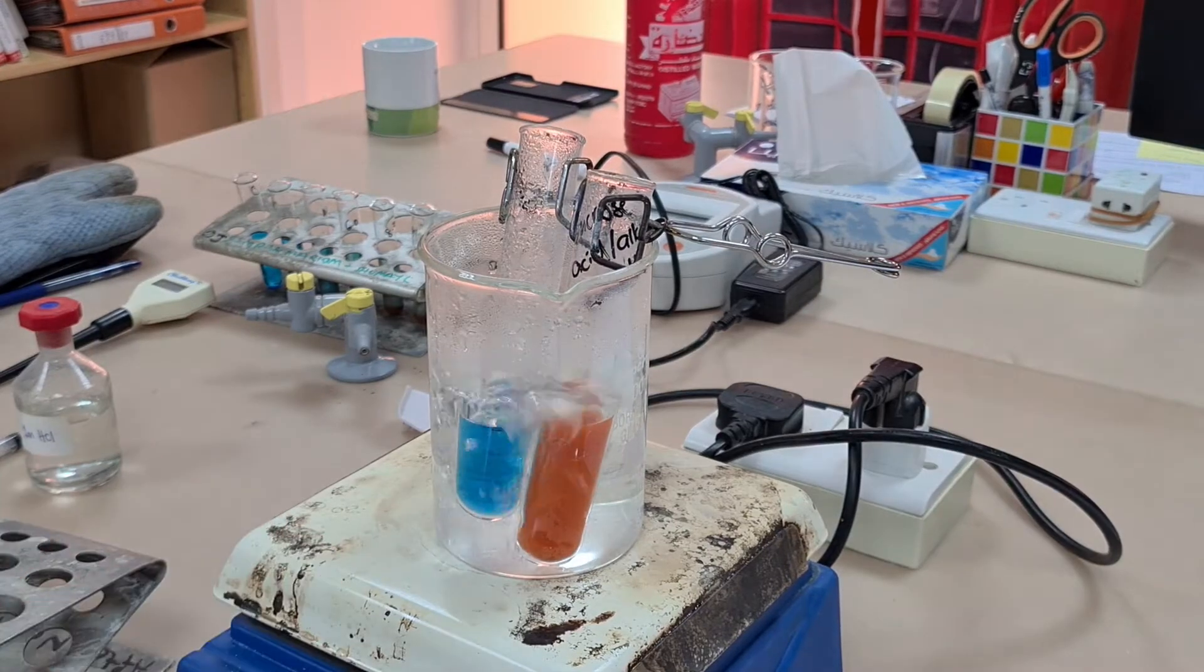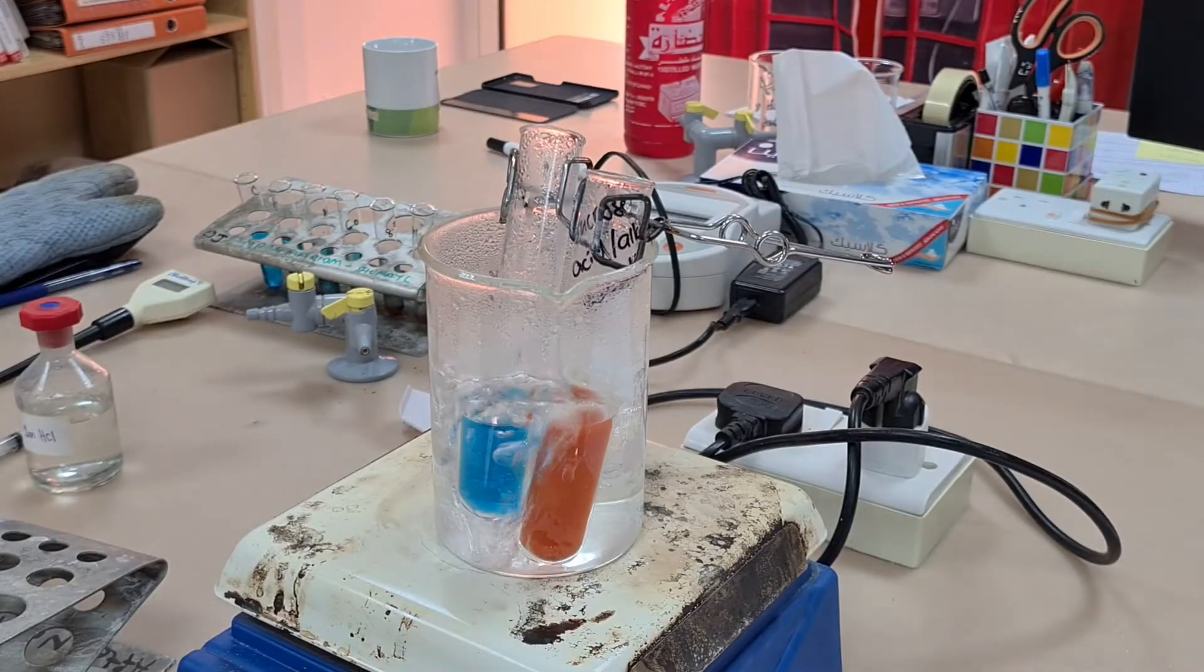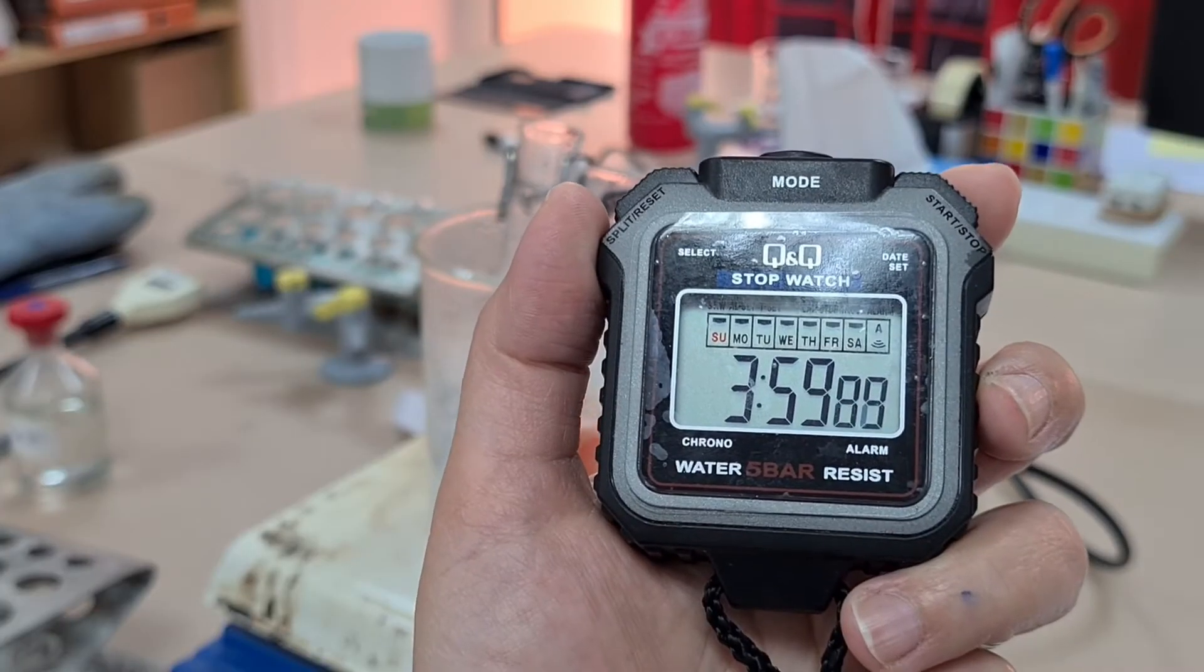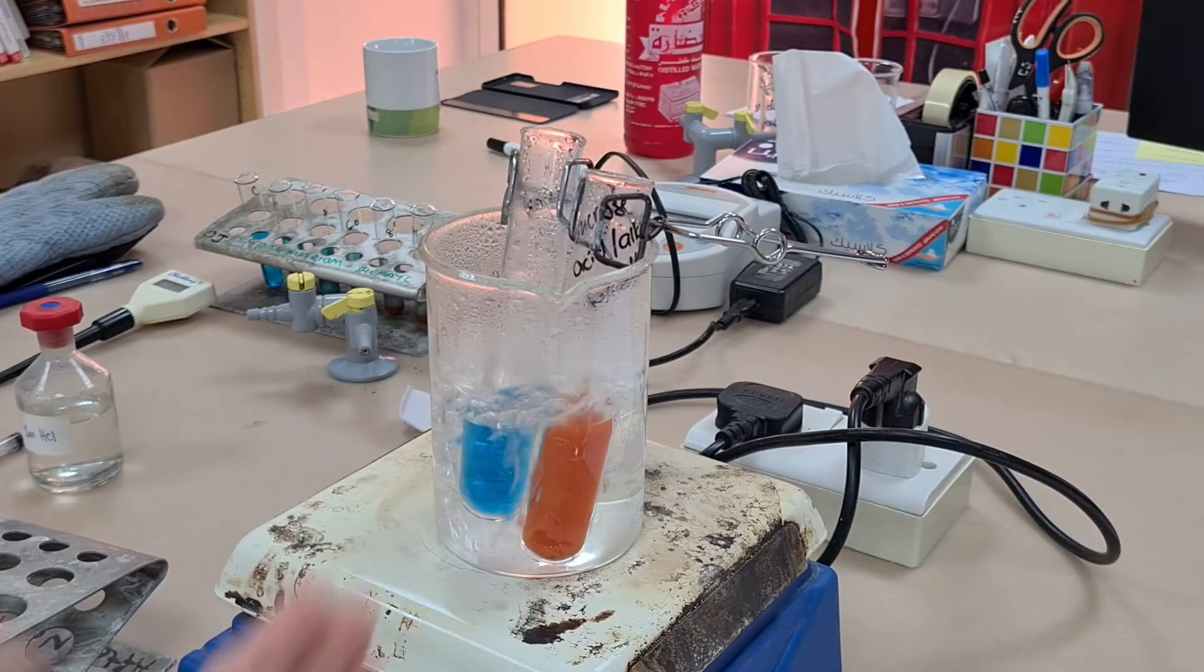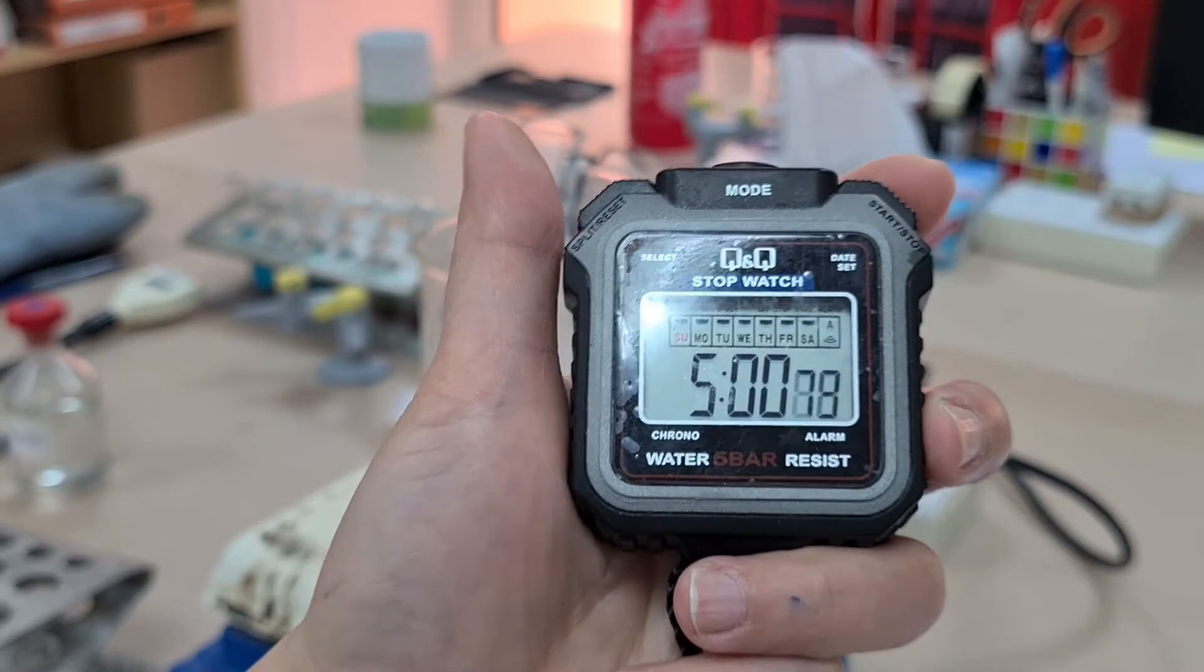So this is the test for disaccharides. The test tube on the left shows us that testing it with Benedict's reagent gives a negative result. Why? Because Benedict's reagent can only be used with reducing sugars. We used sucrose, this is a non-reducing sugar.